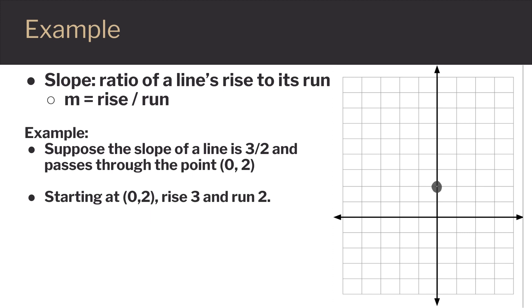From (0, 2) we will rise 3: 1, 2, 3, and run 2: 1, 2, to get the resulting point of (2, 5). And then I can connect the two points to draw the line.